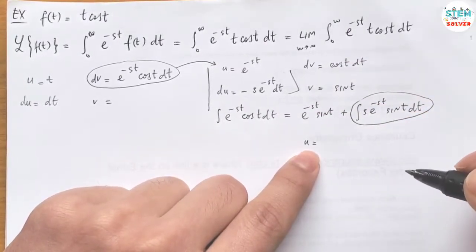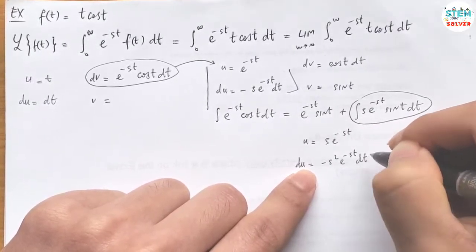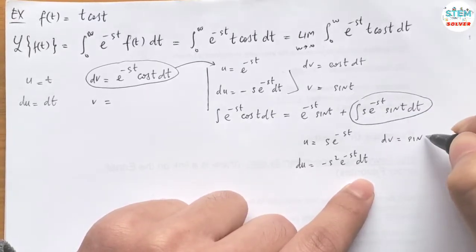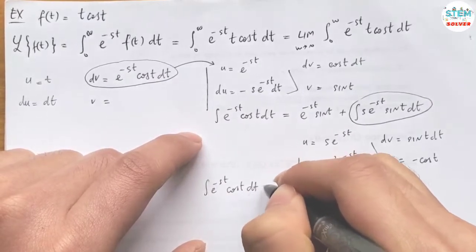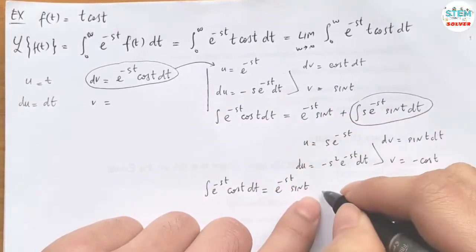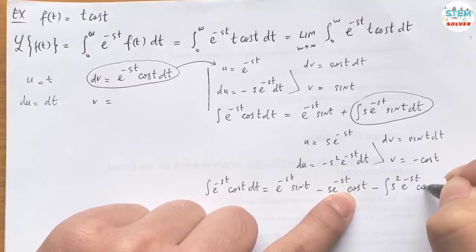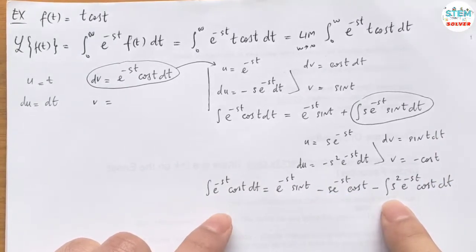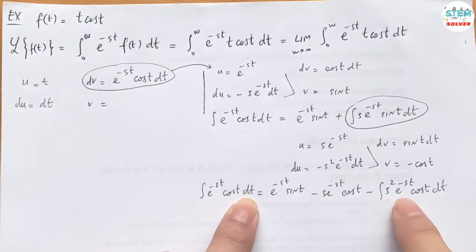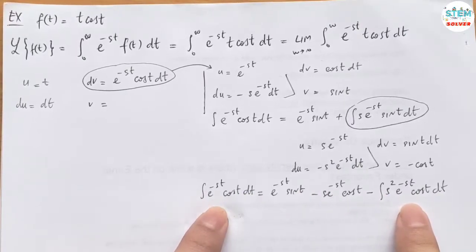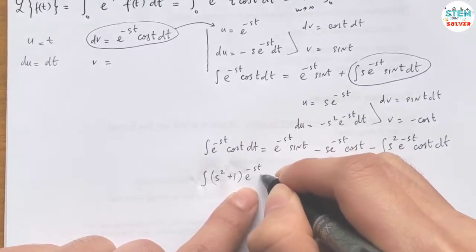Let u equal s·e^(-st), then du equals -s²·e^(-st) dt. And let dv equal sin(t) dt, then v equals -cos(t). We get a result that still contains the integral of e^(-st)·cos(t) dt on both sides. So we move that integral to one side and factor out, giving (s² + 1) times the integral of e^(-st)·cos(t) dt.